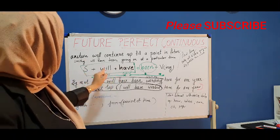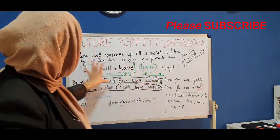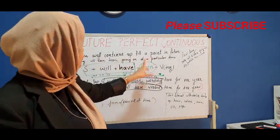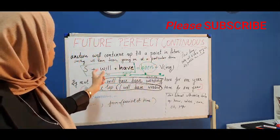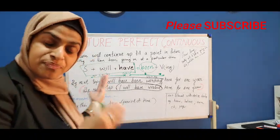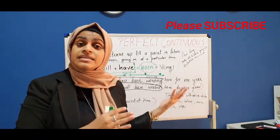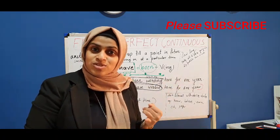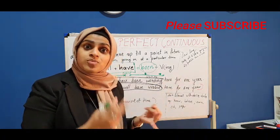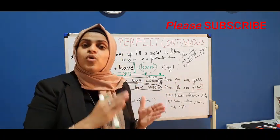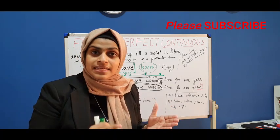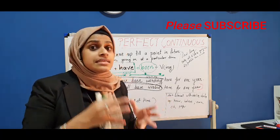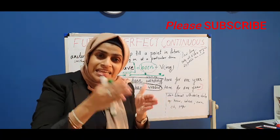The formula is: Subject + Will + Have + Been + ing form of the verb. This is future perfect continuous. You can compare it with present perfect continuous and past perfect continuous from previous episodes — they follow the same pattern. It's very easy to understand when you link them.